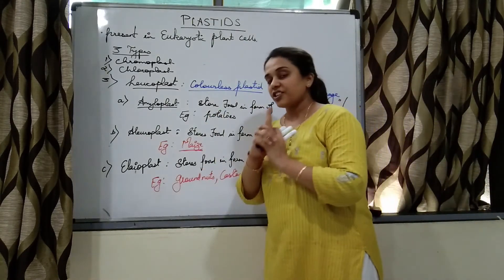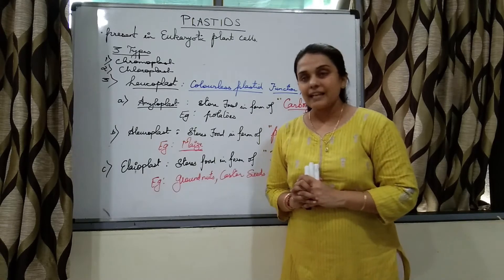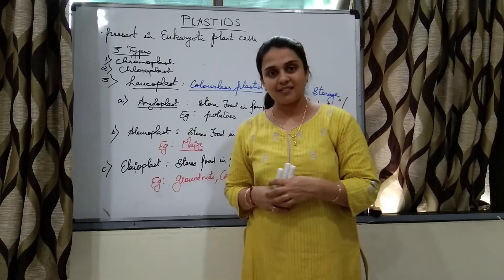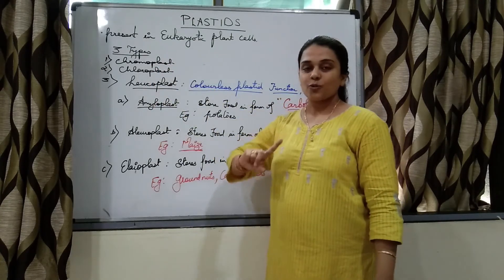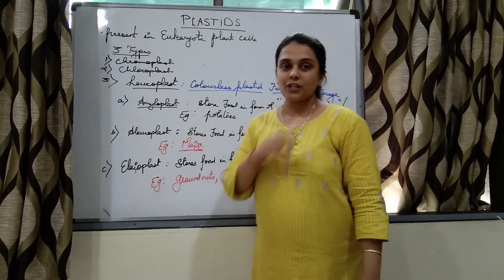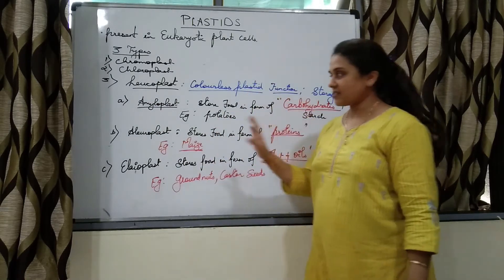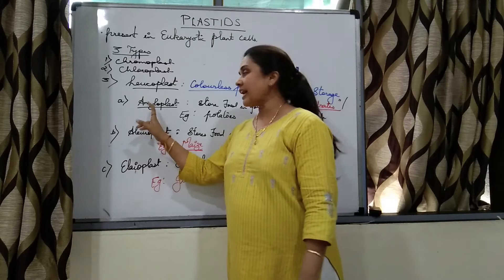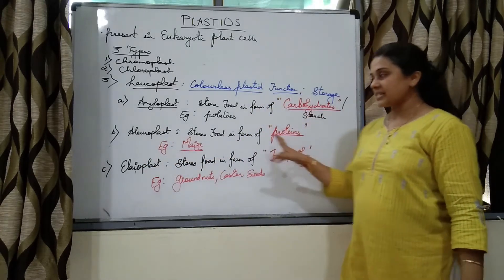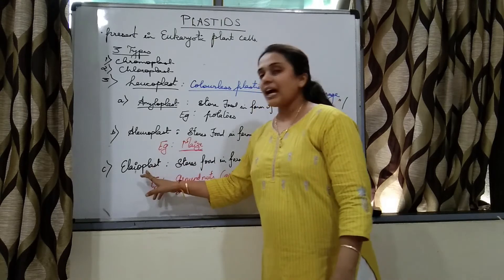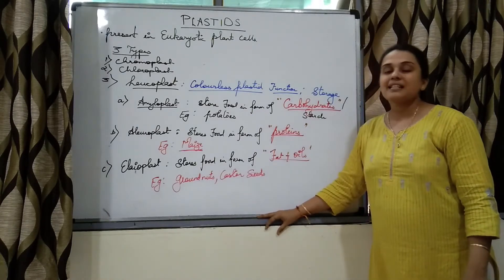To summarize, we have studied three types of plastids present in eukaryotic plant cells and certain algae. Chromoplasts are colorful plastids. Chloroplasts are green colored plastids due to chlorophyll. Leukoplasts are colorless plastids, divided into amyloplasts (store carbohydrates, e.g., potatoes), aleuroplasts (store proteins, e.g., maize), and elioplasts (store fats and oils, e.g., groundnut and castor seeds).